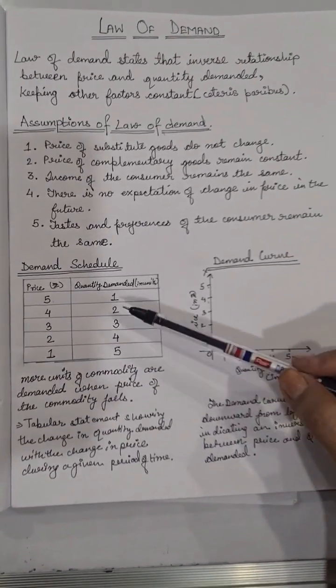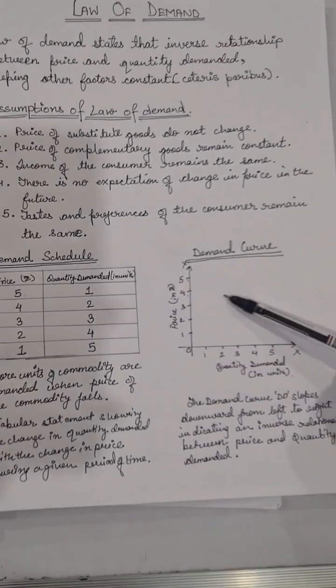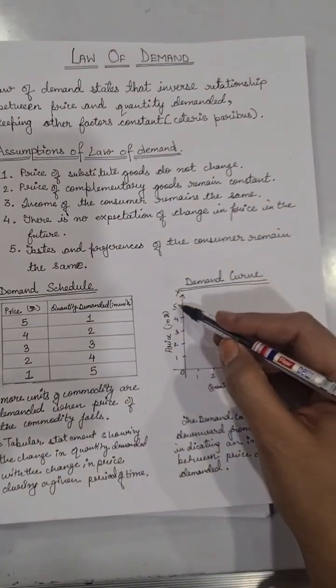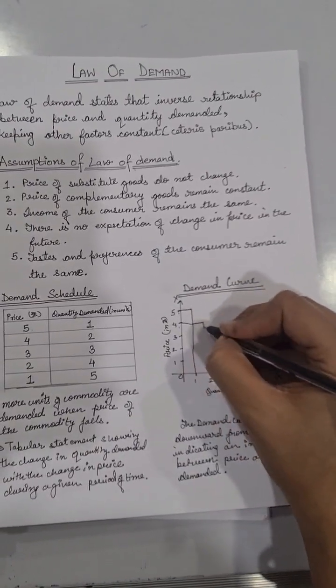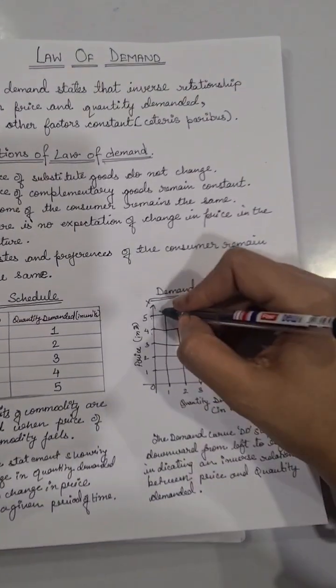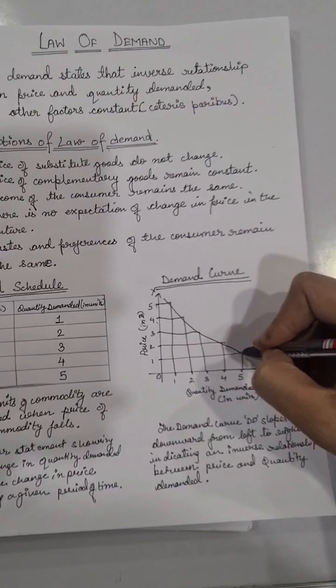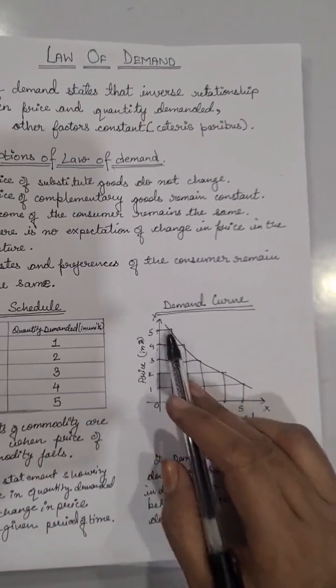Now I'll show this in the form of a curve. When the price is five, the quantity demanded is one, so we can join this like this. When the price is four, the quantity demanded is two. If we join all these points, we get a sloping line which slopes from left to right.